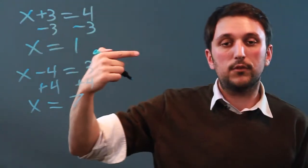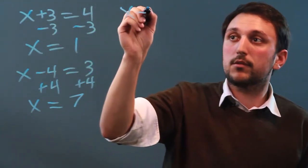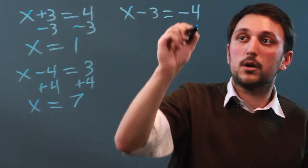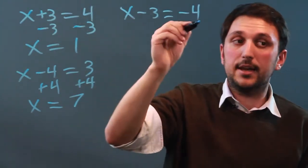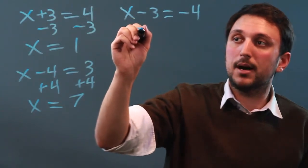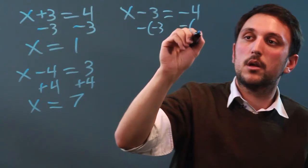Now, the hard part is when you have to subtract a negative number. For example, x minus 3 equals minus 4. Now, what we're going to do here is we would probably just add, but the way that you would subtract a negative number would be to say minus minus 3 and minus minus 3 on each side.